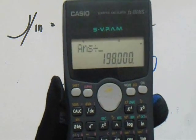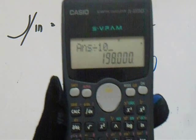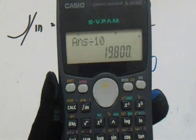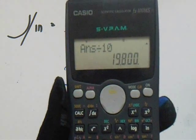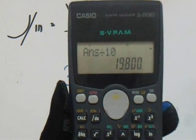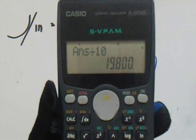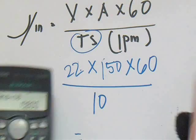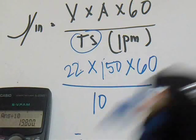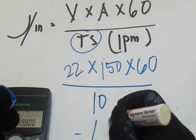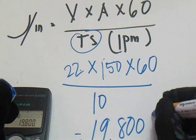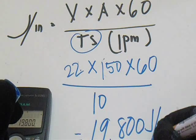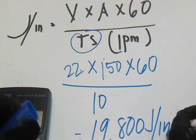Divide it by 10 — so this is our answer: 19,800. Okay, 19,800 joules per inch.